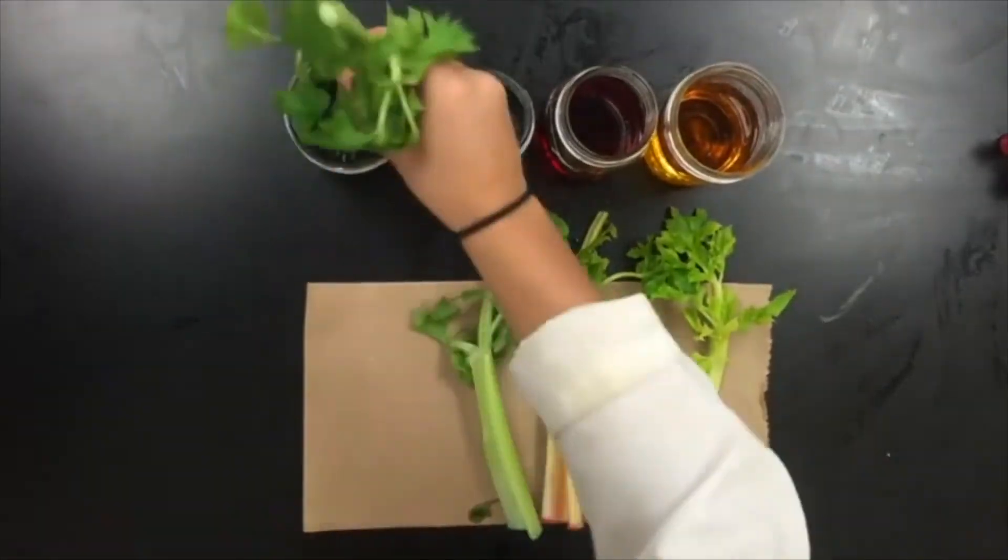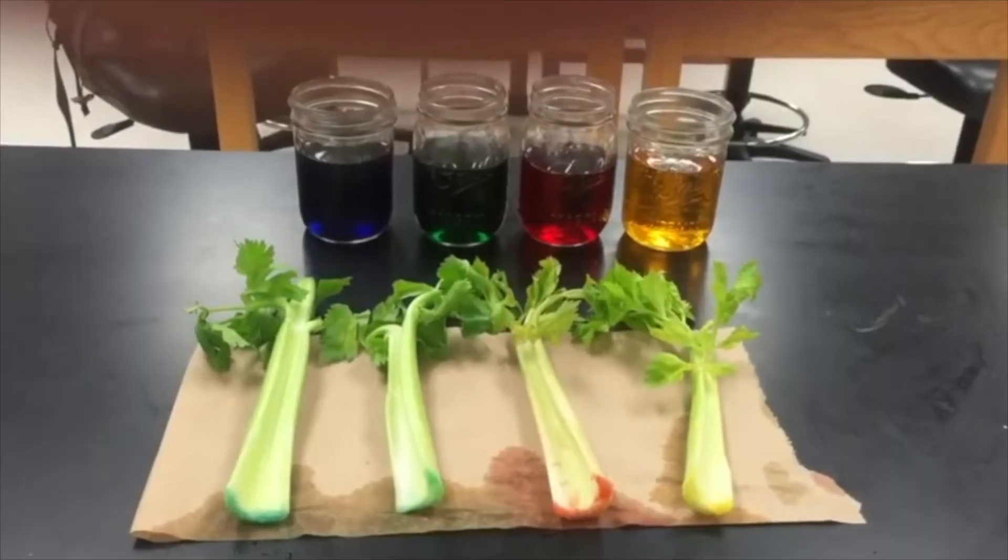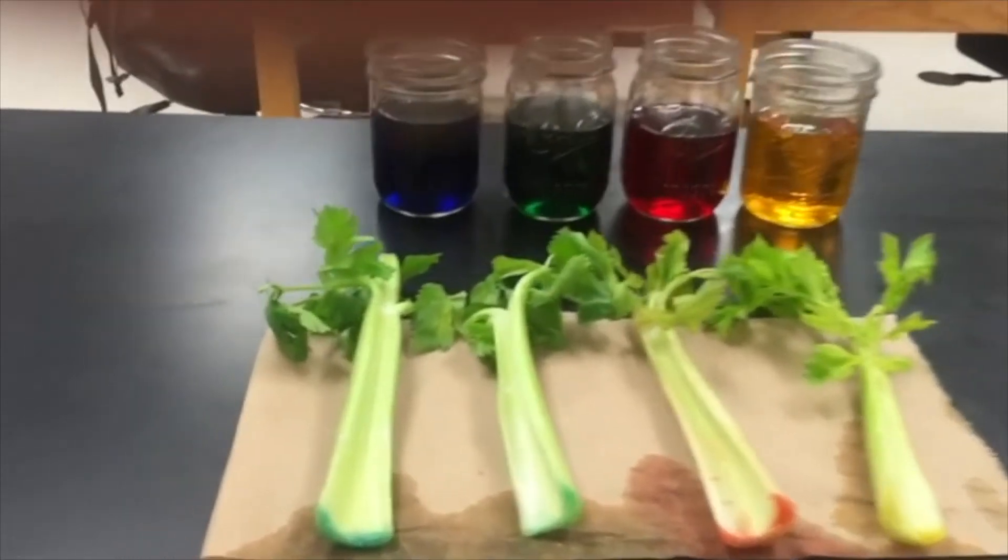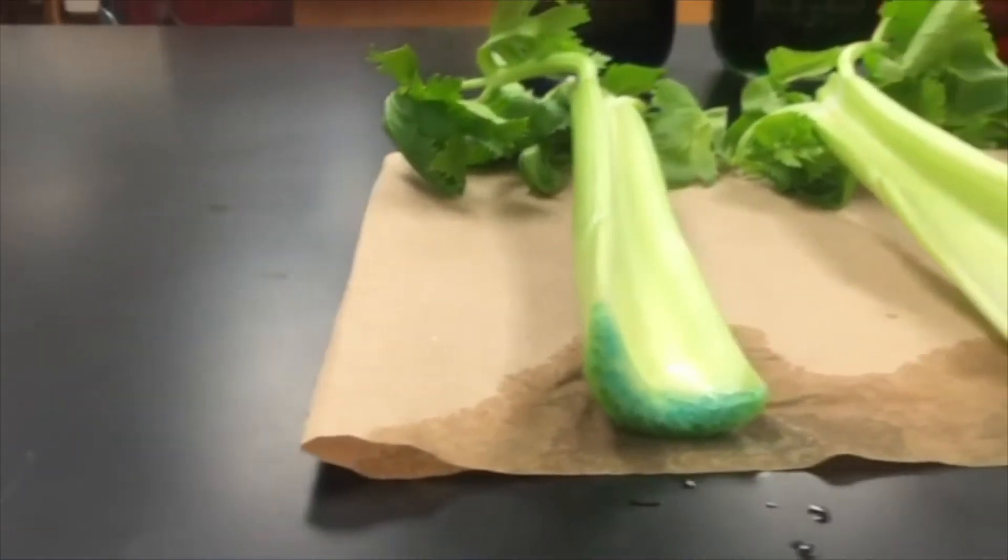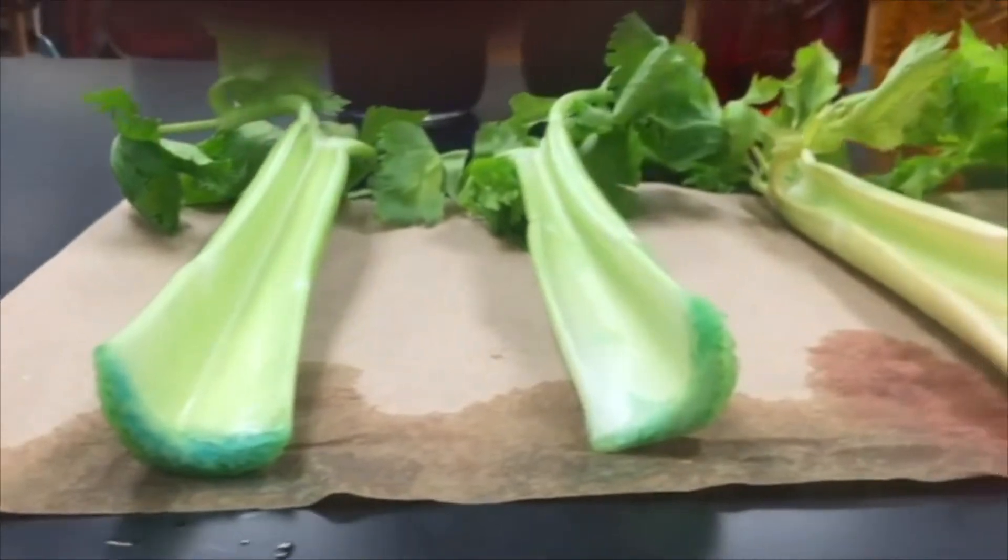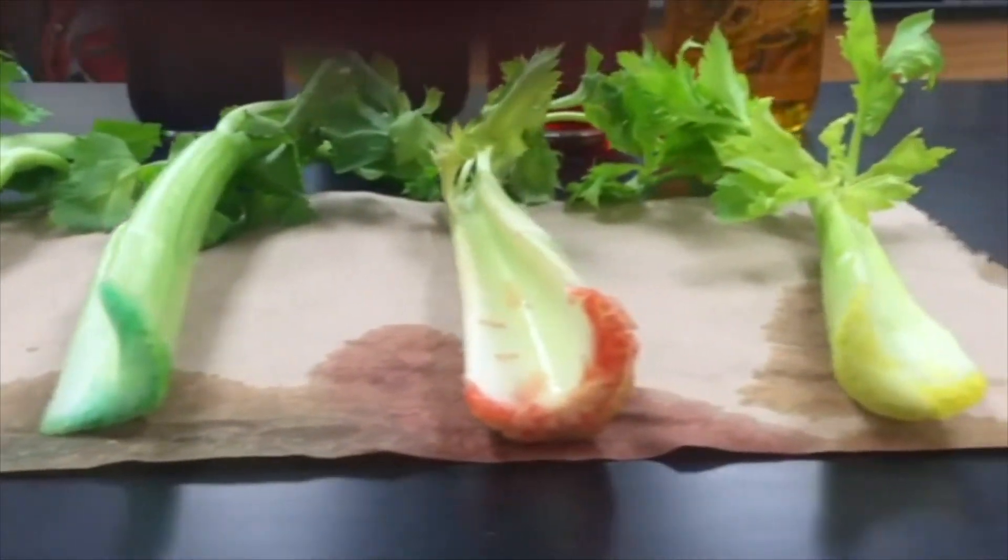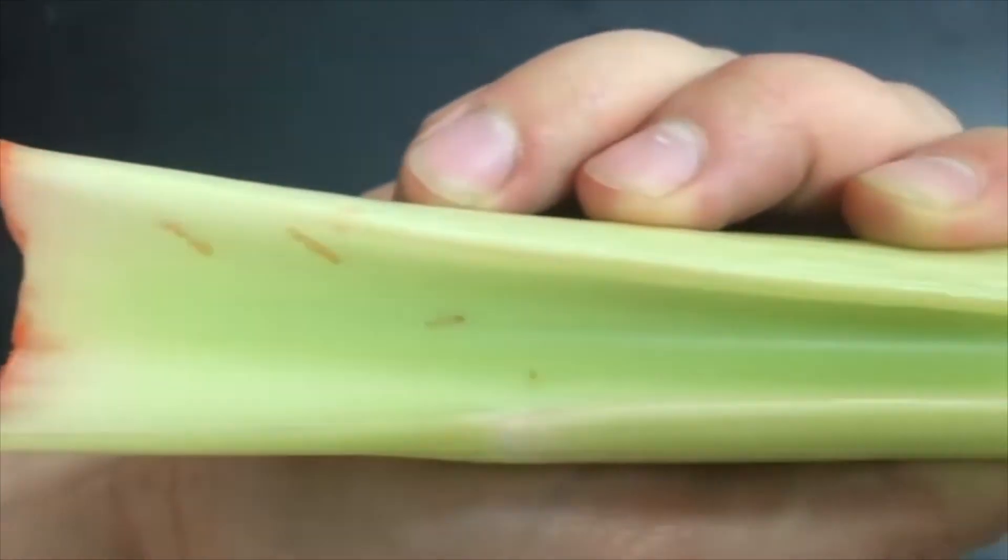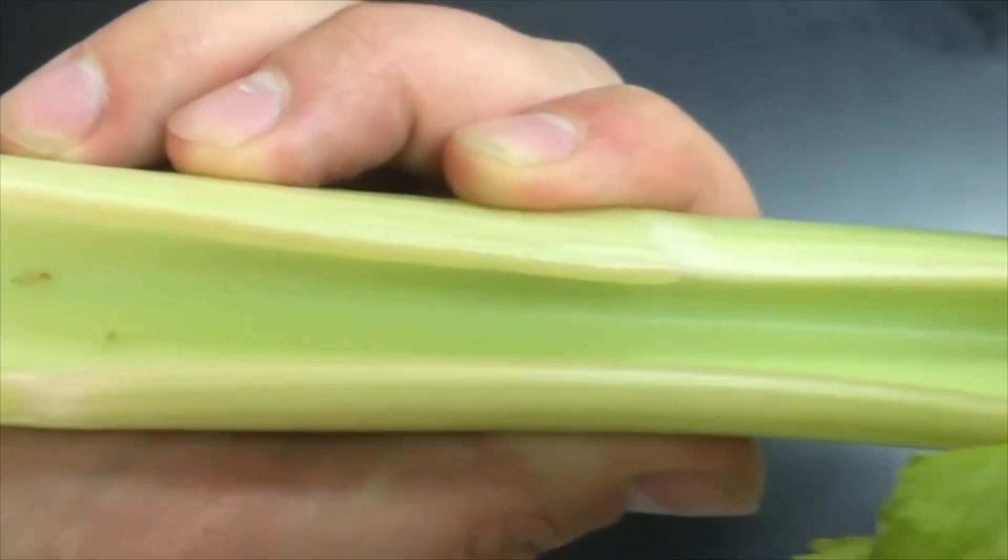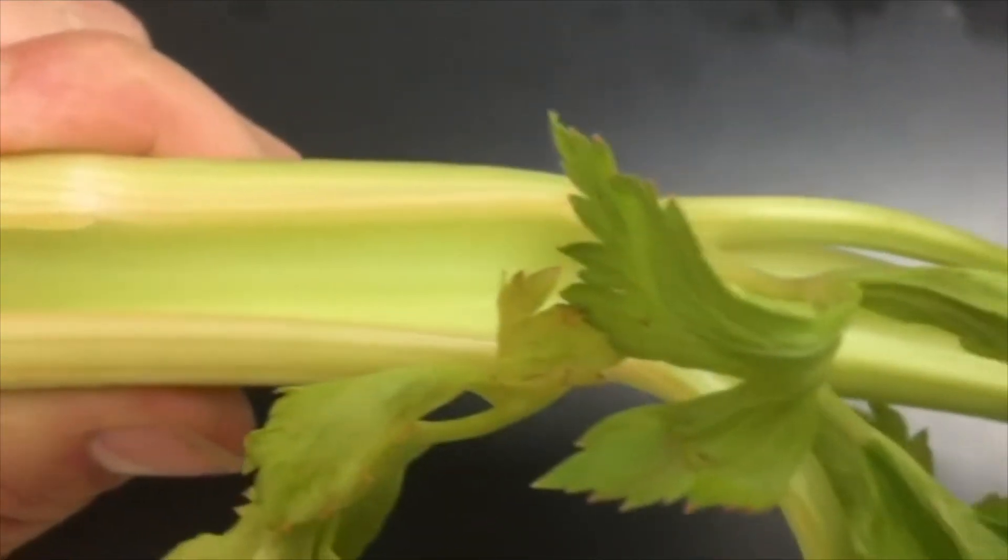Once the time is up you can remove them from the dye and take a look at the bottoms. You'll be able to see that the food coloring has moved into the celery stalks. In fact you'll be able to see clearly that the food coloring has moved up the celery stalks and into the leaves.